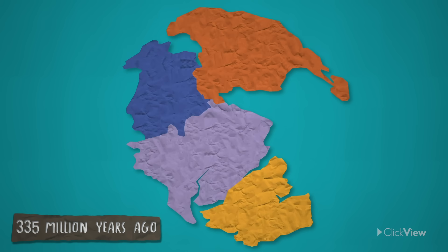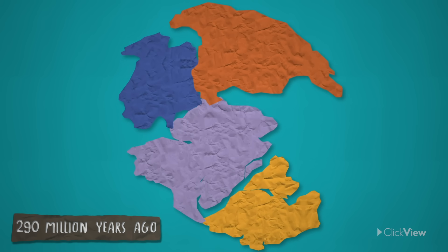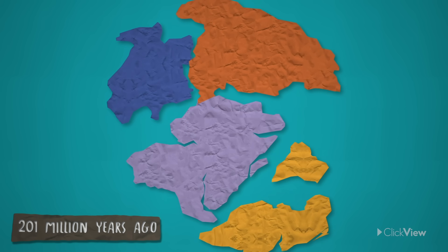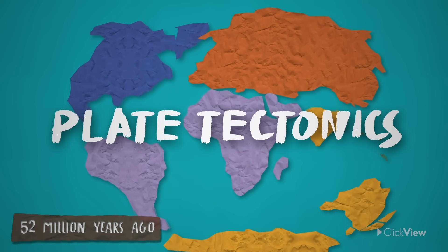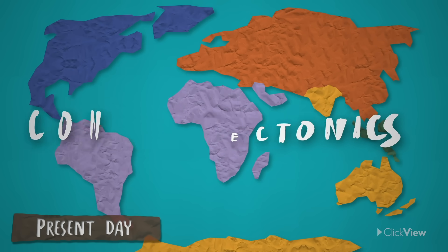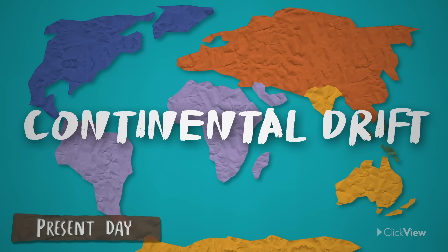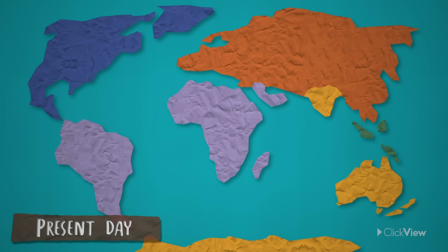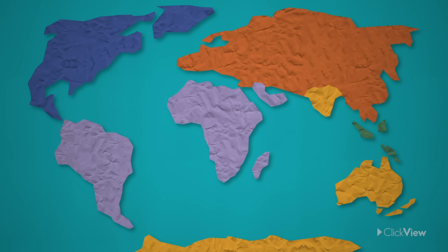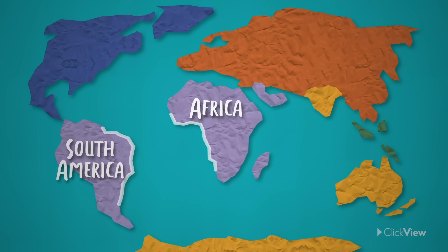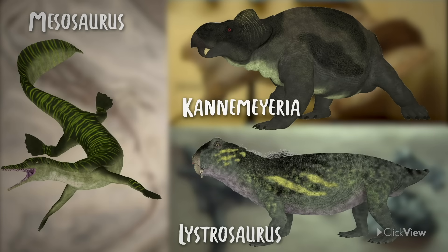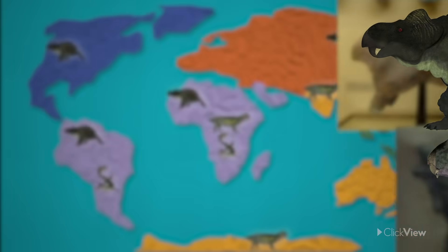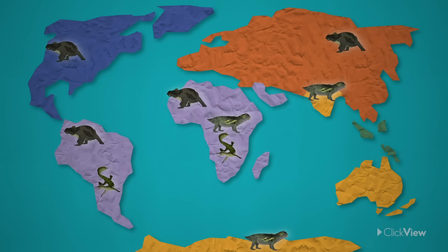Over millions of years, the tectonic plates which hold the continents moved around, smashing into each other and then pulling apart. This process is called plate tectonics, but is sometimes also known as continental drift. If you look closely, you can see where some of the edges of the continents line up — like the edges of Africa and South America. Fossils of animals that couldn't swim or fly have been found on different continents, providing further evidence that all the continents were previously connected.